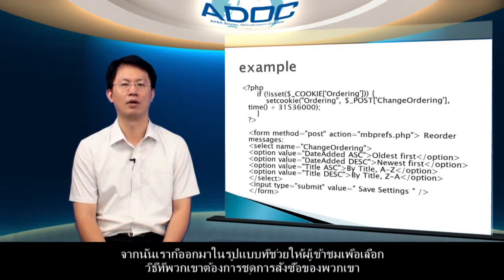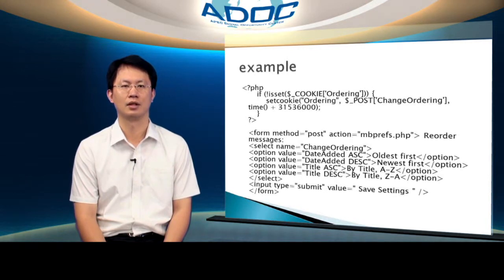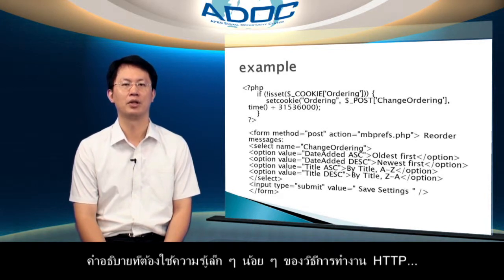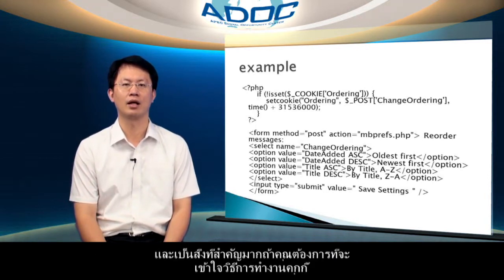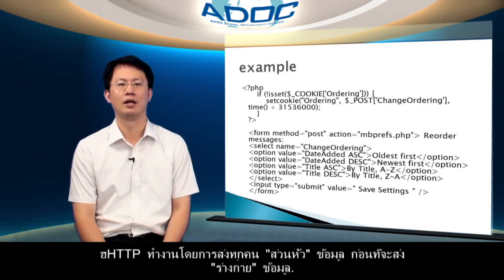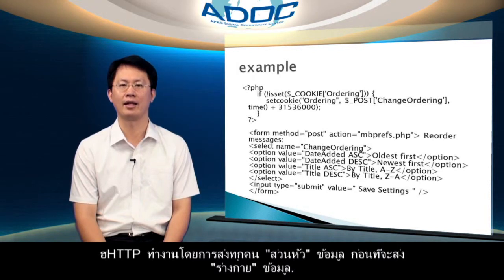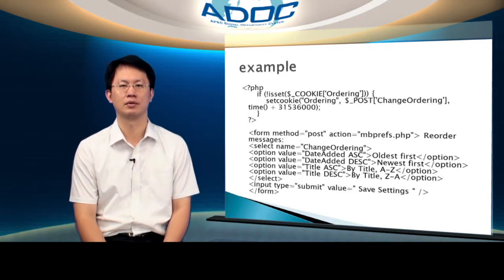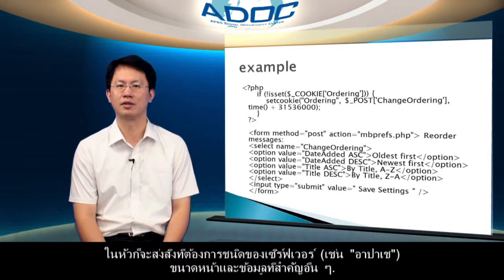Then we output the form allowing visitors to select how they like their ordering set. The setCookie code needs to be before the HTML form because of the way the web works. The explanation requires a little knowledge of how HTTP works, and it is quite important if you want to understand how cookies work. HTTP operates by sending header information before it sends body information. In the header, it sends things like server type, page size, and other important data.